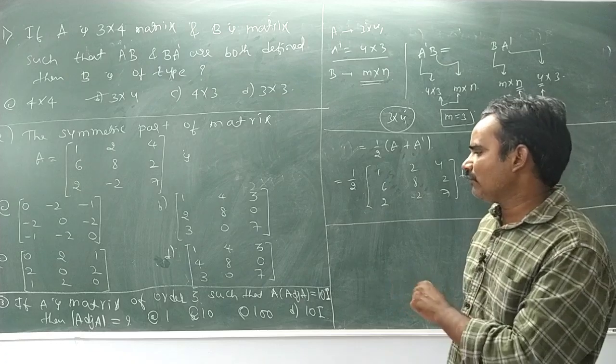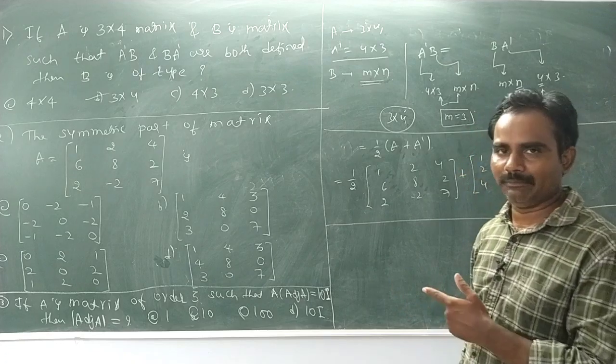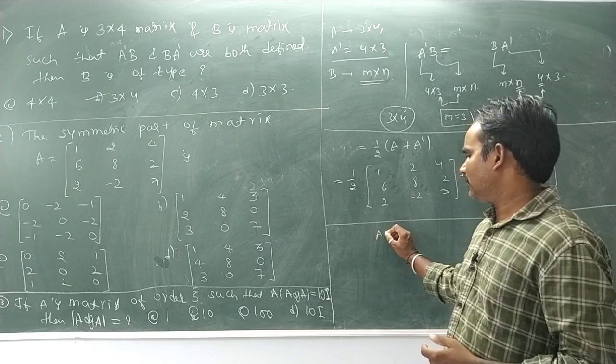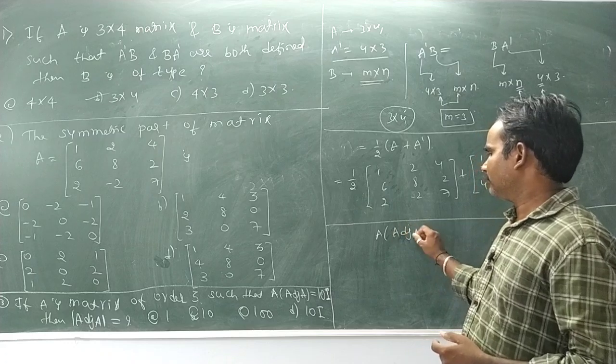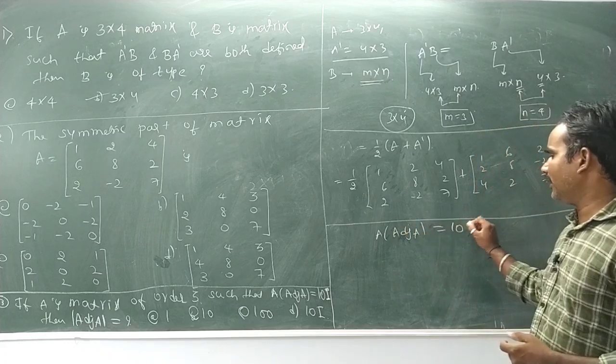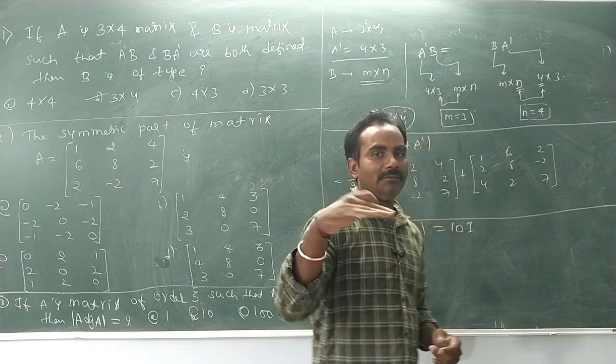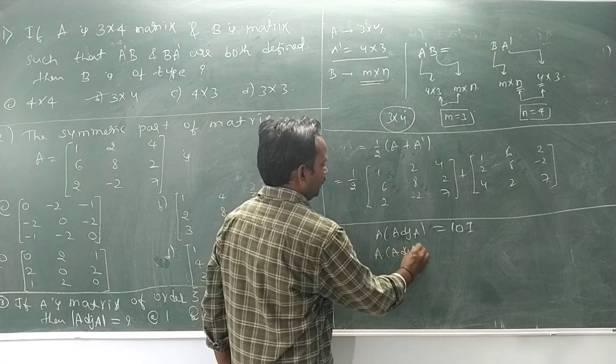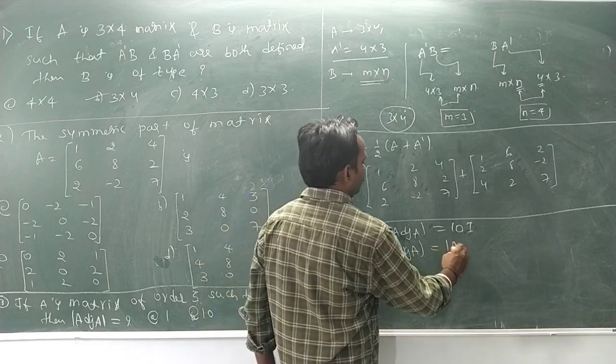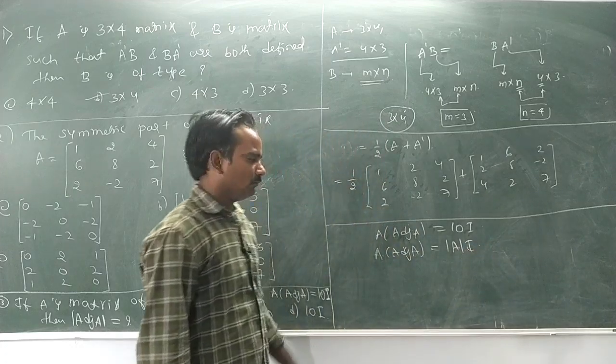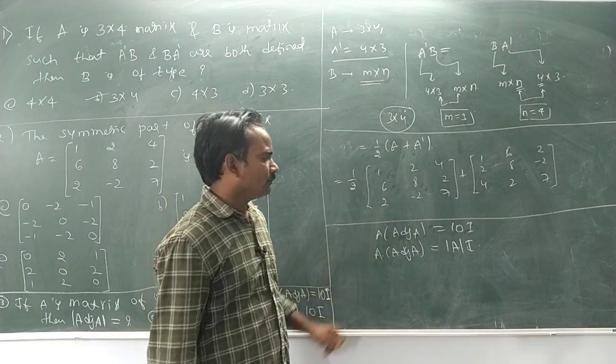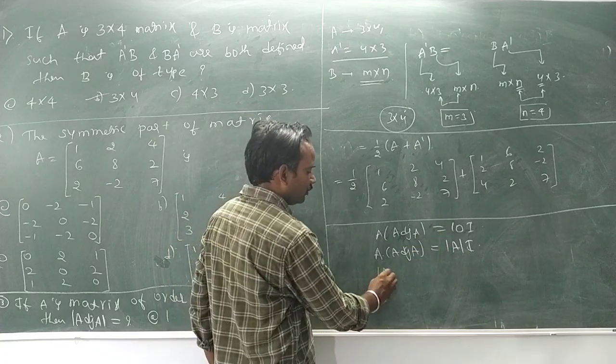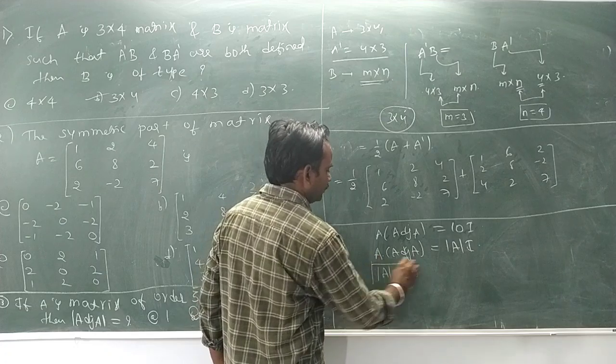If A is a matrix of order 3 such that A times adjunct of A equals 10I. We already know the formula: A times adjunct of A equals determinant of A times I. Comparing, determinant of A equals 10.